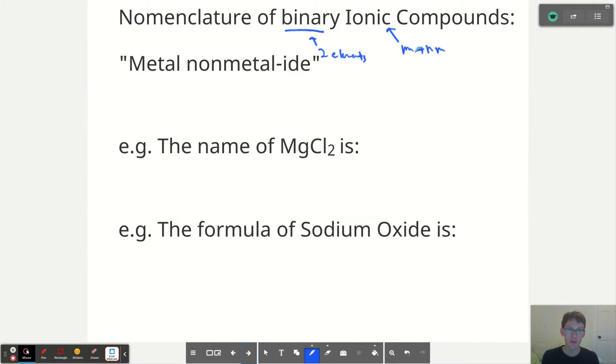It's also possible for polyatomic ions to play a role, but we'll get to that later. So nomenclature for these compounds can be quite simple. We just need to name the metal and then we need to add the nonmetal name with an -ide suffix.